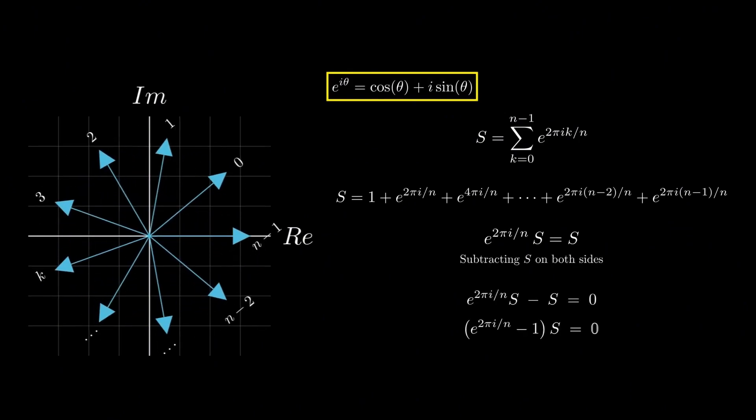Now here's the key point: we know e^(2πi/n) is not equal to 1 for n greater than 1. So the only solution is S = 0.